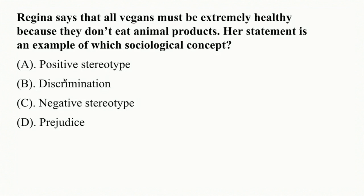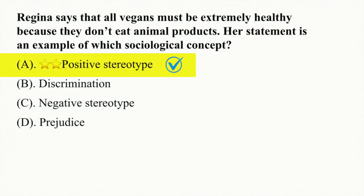Discrimination is incorrect because it involves treating individuals unfairly based on group membership. Negative stereotype is not correct because Regina's statement is actually positive — she says they must be healthy, which is favorable. Prejudice is also incorrect because it involves a generalized belief that portrays a group in an unfavorable or harmful way, which is not what Regina's statement does. So the correct answer is A, positive stereotype.